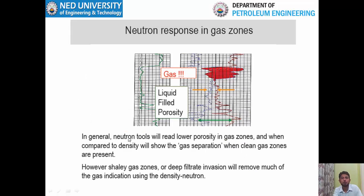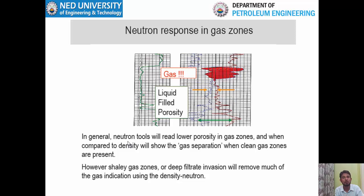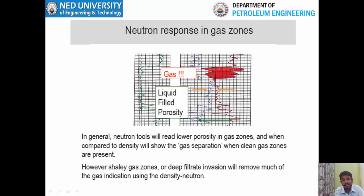Neutron tools read lower porosity in gas zones because gas has a low hydrogen index and low density. Density tools also read lower in gas zones — the overall bulk density is lower compared to oil and water zones. So in a gas zone, both neutron porosity and bulk density values are lower, resulting in a big negative separation on the log. However, this method is only valid in clean formations. In shaly gas zones or with deep filtration invasion, the president log response will not be present.